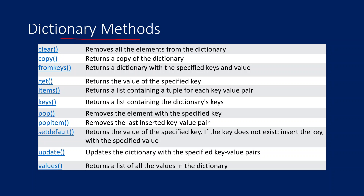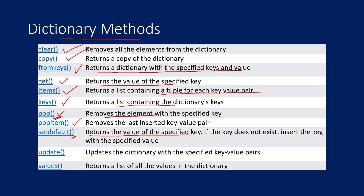Here are some useful dictionary methods: clear removes all items; copy copies the dictionary to a new variable; fromkeys returns a dictionary with specified keys and values (try as homework); get returns the value of a specified key; items returns key-value pairs as tuples; keys returns all keys as a list; pop removes an item by key name; setdefault returns the value of a key or inserts it if it doesn't exist (try as homework); update changes or adds key-value pairs; values returns all values as a list.